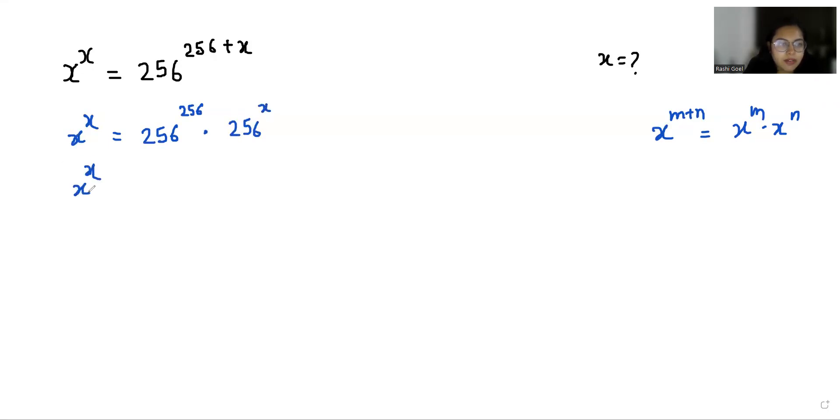Now, x^x divided by 256^x equals 256^256.